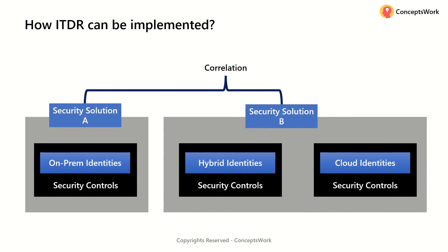In the majority of enterprises, you may be using two different solutions to handle these scenarios, because there is no single solution that can protect everything. Depending on how an enterprise grows, you may end up with multiple solutions — that's a fact. But you still need to ensure some kind of correlation is happening between them, so that something suspicious in the on-premises environment for a specific identity can be correlated with insights from cloud activities.